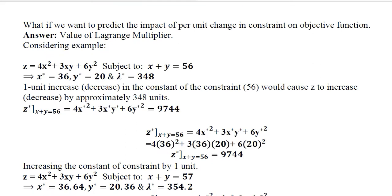What if we want to predict the impact of per unit change in the constraint on the objective function? This is what Lagrangian multiplier tells us. That if there is per unit change in the constraint value, what will be the change in the objective function?